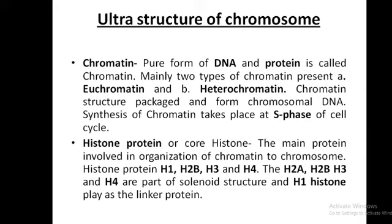The ultra structure of chromosomes: chromosomes and chromatins are the same things. Chromatins — pure form of DNA and protein — is called chromatin. There are mainly two types of chromatin present: euchromatin and heterochromatin. Chromatin involves structure packaged and forms chromosomal DNA. Synthesis of chromatin takes place at the S phase of the cell cycle, because DNA replication mainly occurs in S phase.